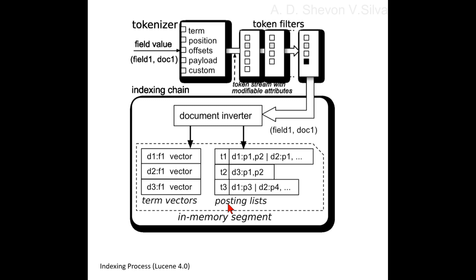Here you can see the tokenizer. It's connected to field value field 1 doc 1. The tokenizer includes term, position, offset, payload, and custom attributes. It is connected to token filters via token stream with modifiable attributes.